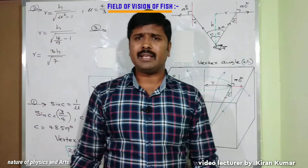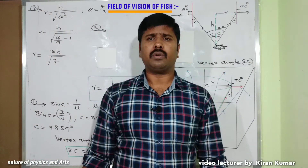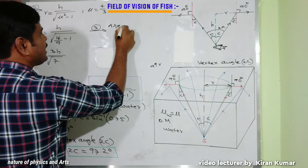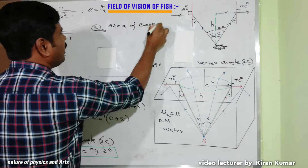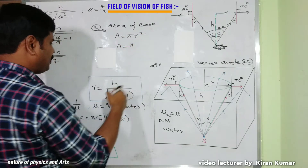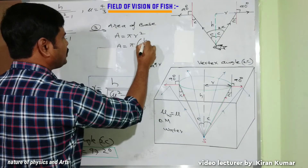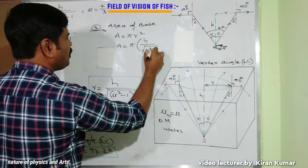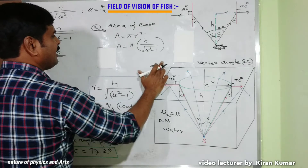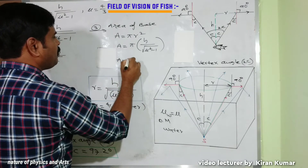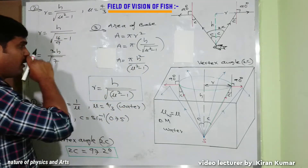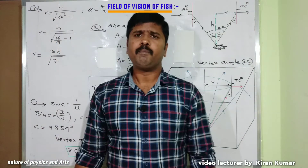Third application: the area of the circular base of the inverted cone. Area = π r² = π · (h / √(μ² − 1))², which simplifies to Area = π h² / (μ² − 1). This is the area of the base of the field of view.